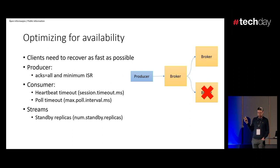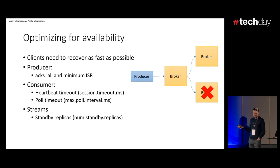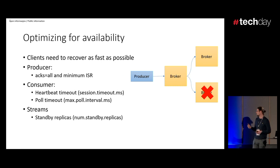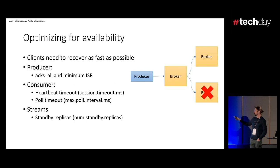When it comes to availability, both producers and consumers need to recover as fast as possible. On the consumer side, the consumer is basically an endless loop constantly polling for messages. Once it gets messages, it starts processing them. During that processing, your processing might be too slow because you're talking to an external system, or you have a garbage collection pause. If there is a pause and your consumer doesn't report fast enough to the rest of the group, it will be thrown out of the consumer group and trigger a rebalance. Things like network partitions or garbage collection can affect this. So if you're optimizing for availability, you might need to increase your heartbeat timeout or your poll timeout.